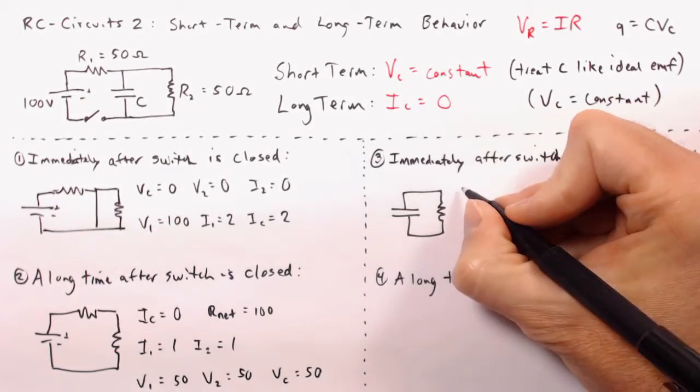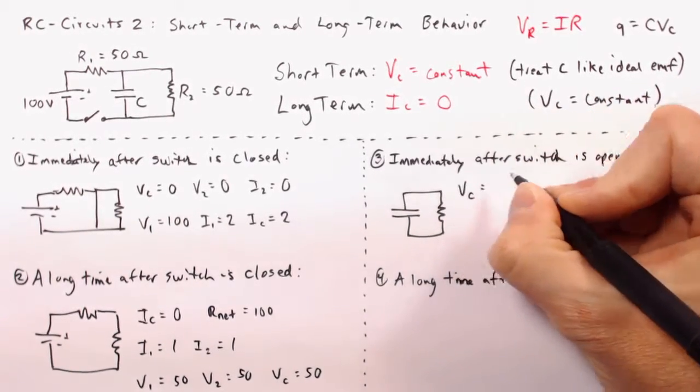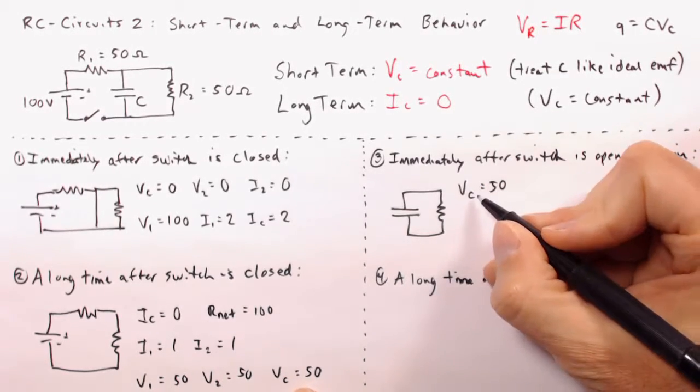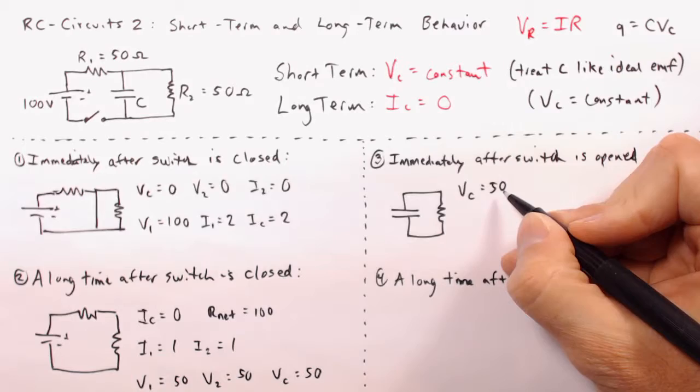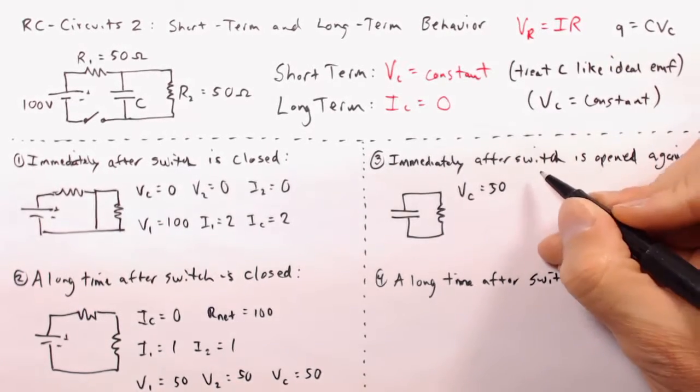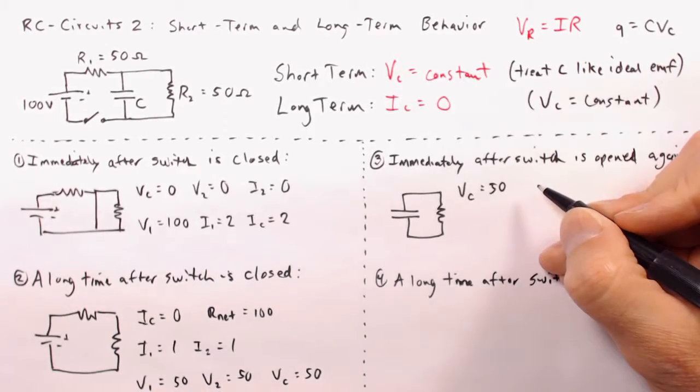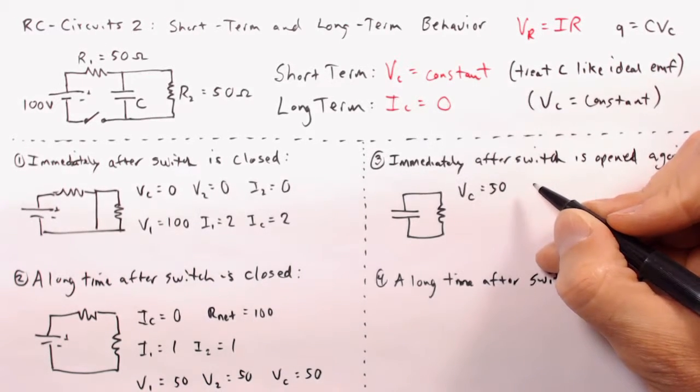Initially, the capacitor voltage is going to be 50, because that's what it was here, and it's going to take some time for this to change one way or the other, and we don't have much time because we're talking about fraction of a millisecond after we were here. So the initial VC is whatever it was, in this case 50, and we can continue from there.